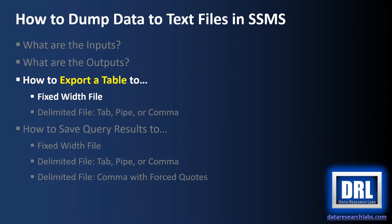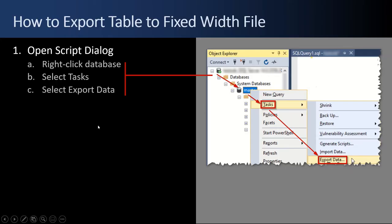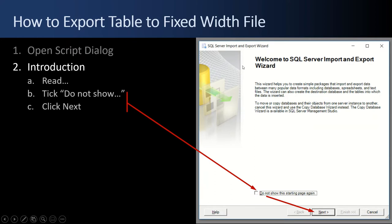Next up, how to export a table to a fixed width file. First, we open a script dialog. To do that, we right-click on the database we're interested in, select Tasks from the pop-up menu, and then select Export Data. That will pop up a dialog box — a wizard. The first step is an introduction; you can tick 'do not show' if you like and click Next.